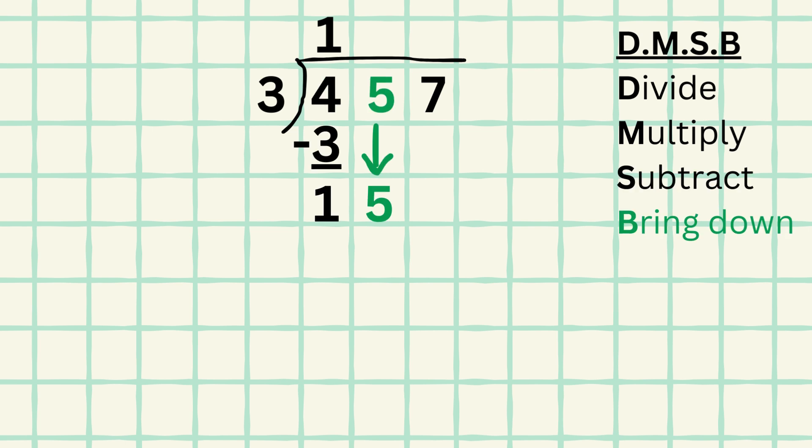Then we must bring down the following digit, which is 5, and then we must return to divide. And it turns out that 15 divided by 3 equals 5. So 5 is the second digit in our answer.